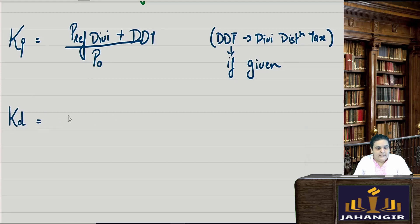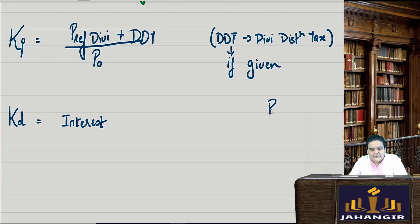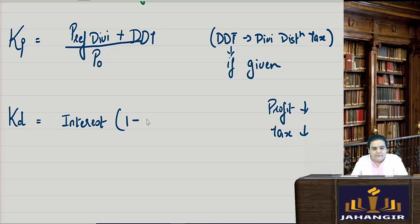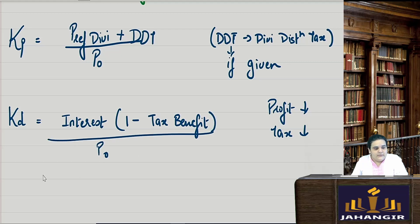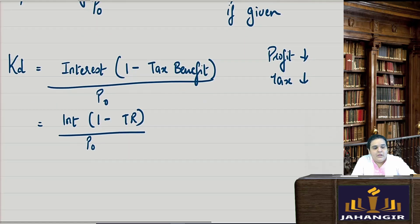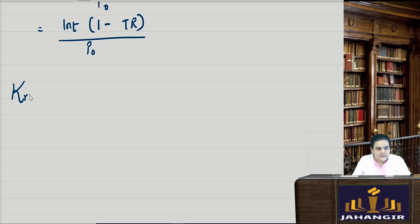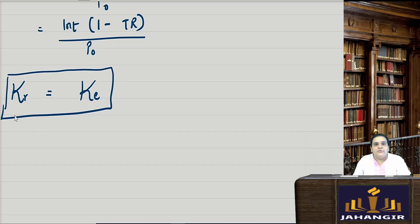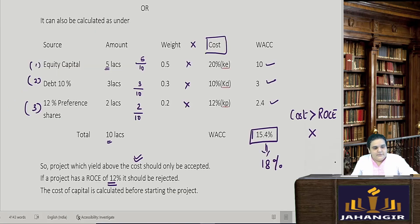For cost of debt, the formula is: Interest × (1 − Tax Rate) / P0. Because a company pays interest on debt, profit is reduced, and when profit is less, tax is also reduced — so we always take the tax benefit on interest. The simplified formula is: Interest × (1 − t) / P0. Also, for retained earnings, if nothing specific is provided, the cost of retained earnings equals the cost of equity.